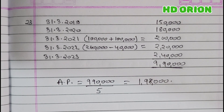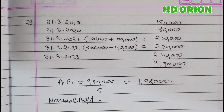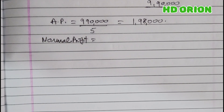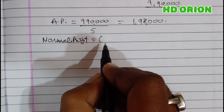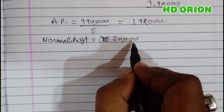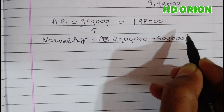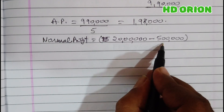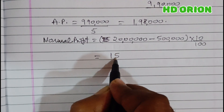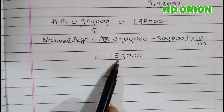To calculate super profit, we first find normal profit: capital employed multiplied by rate. Capital employed is not directly given, so we calculate it by subtracting outsiders' liabilities from total assets: ₹20 lakh minus ₹5 lakh equals ₹15 lakh. At 10% rate of return, normal profit is ₹1,50,000.